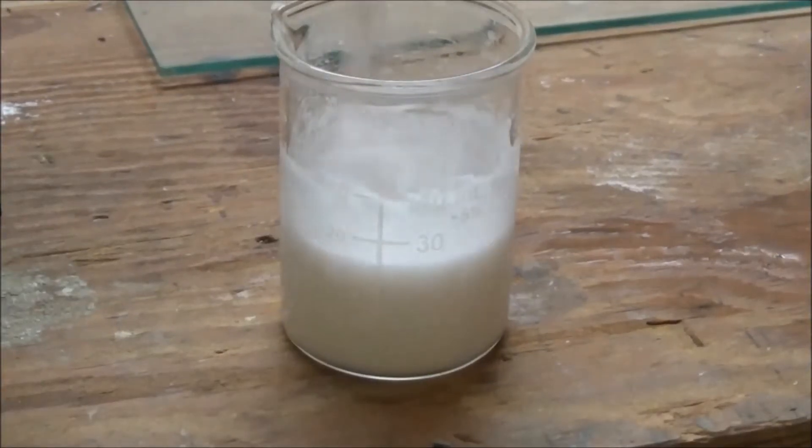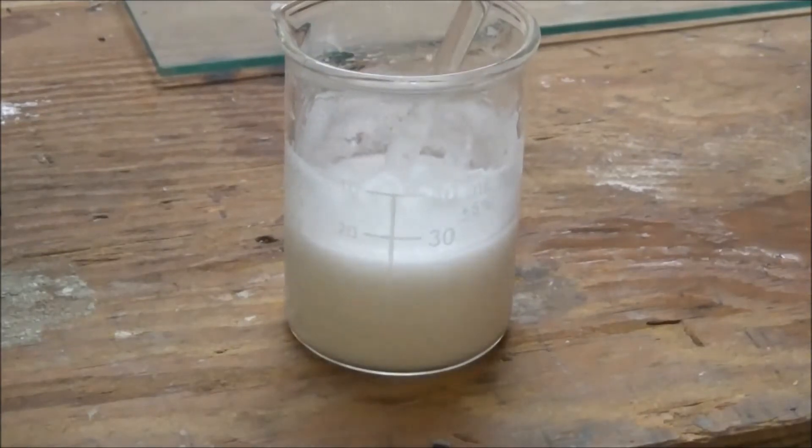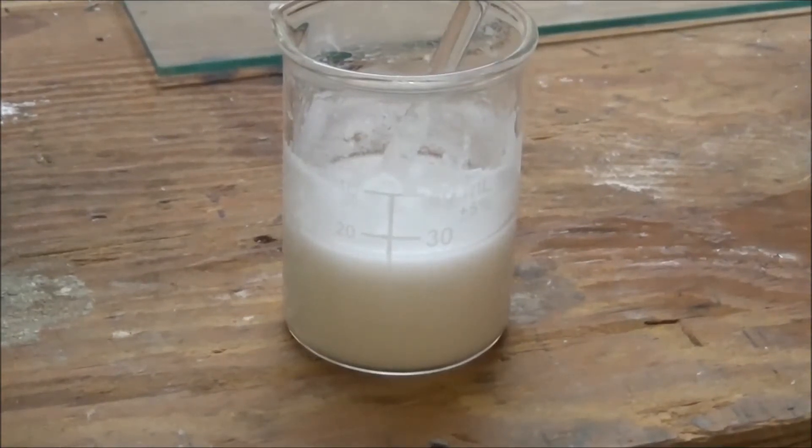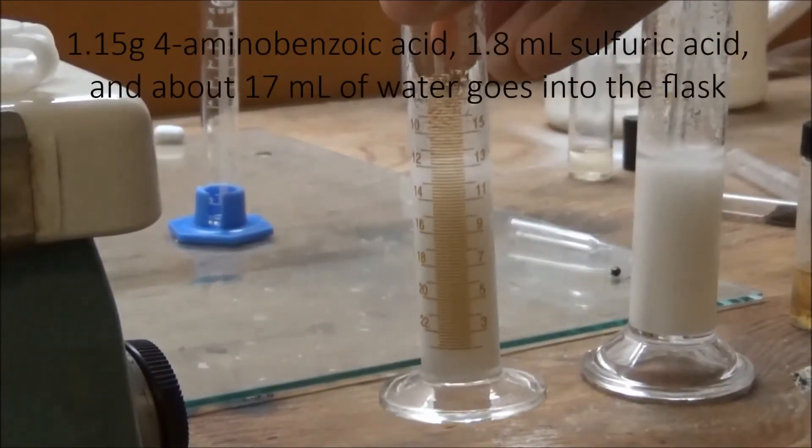With stirring, some water, and ice, I was able to add all of the sulfuric acid and got this suspension you see here. At this point, I decided to reduce my scale to one-third of the original. I mixed it up and measured out one-third of the total volume.